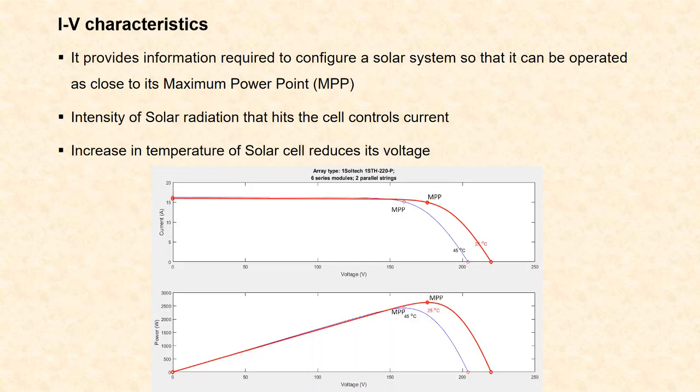We are going to see about the IV characteristics of solar cell. This gives information about how to configure a solar system so that we can operate it close to its maximum power point.